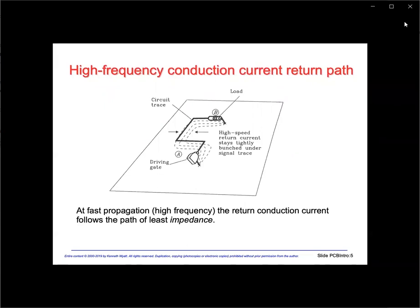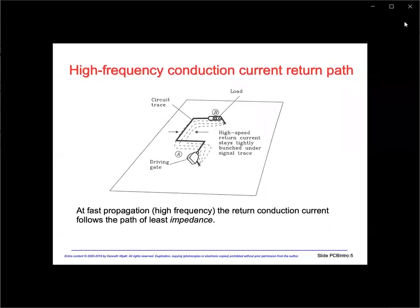For high frequency signals, the return conduction current path is relatively confined along the return plane and directly underneath the signal trace. We call this the path of least impedance, and is due to mutual inductance between the trace and plane. So what constitutes high frequency? Something greater than 50 to 100 kilohertz. This concept is most important for most other digital and RF technologies.